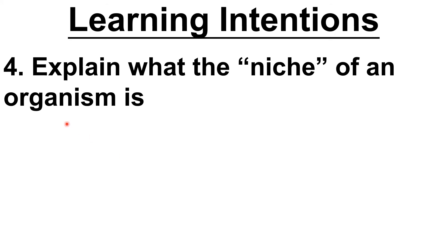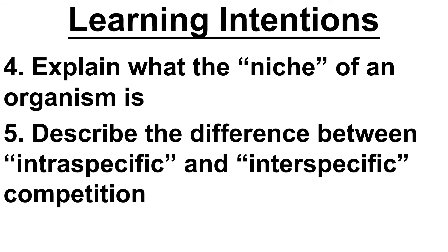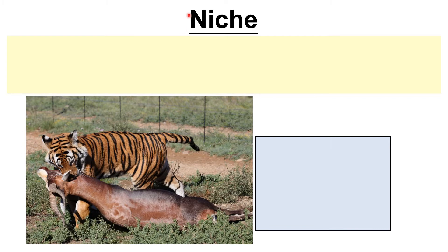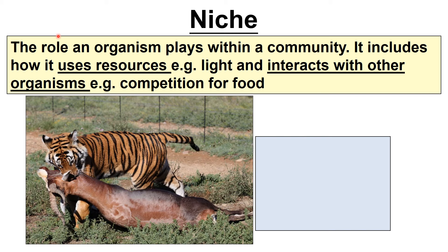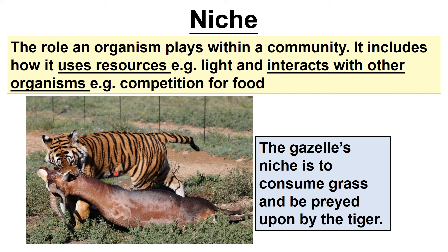The next part of the ecosystem topic: explain what the niche of an organism is. A niche is the role that an organism plays within a community — what it does. That will involve how it uses resources like light and how it interacts with other organisms, for example competing for food. For the gazelle, its niche is to consume grass and be preyed upon. A good way to think about a niche is to look at the food web: look at what it's consuming, look at what it's being consumed by, and describe that.